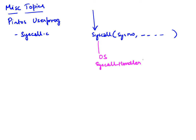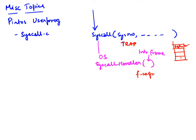The syscall handler receives an interrupt frame pointer, which holds the context. Before the transition into the OS, this is actually a trap call — a software interrupt. The trap puts everything it needs on the stack: the syscall number is at the top, followed by the rest of the arguments. The interrupt frame has f->esp which points to that stack, so you can grab things off of it.